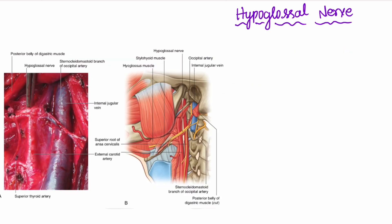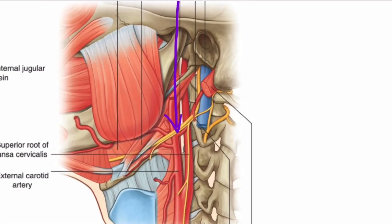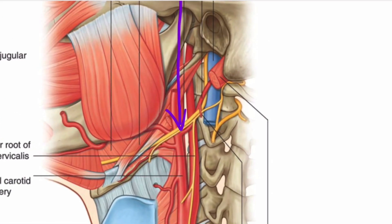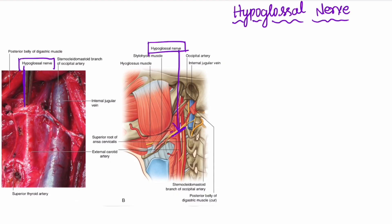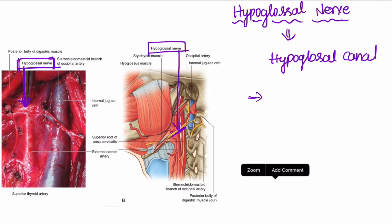The hypoglossal nerve exits the cranial cavity through the hypoglossal canal and supplies the tongue.